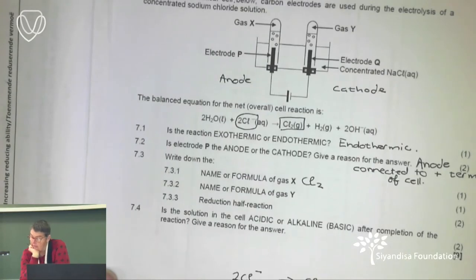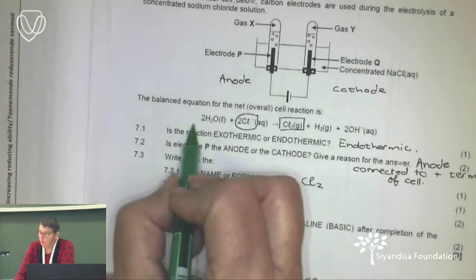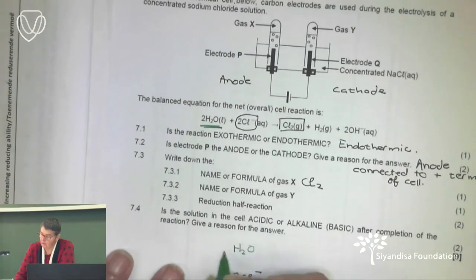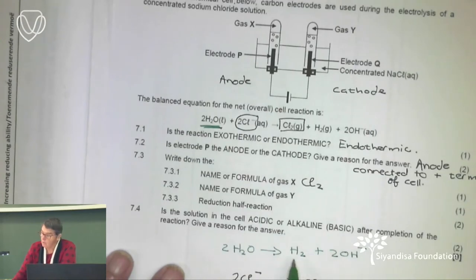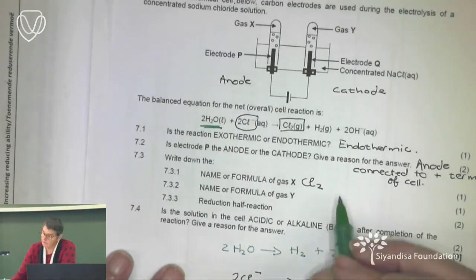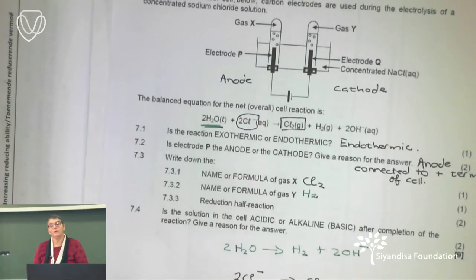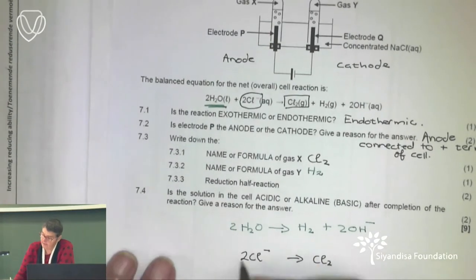For gas Y, on the cathode side we only had H₂O, and it becomes OH⁻. So what happened is H₂ gas formed. Gas Y is therefore H₂ or hydrogen gas. For the reduction half reaction, we've established the oxidation reaction is at the anode, so the cathode reaction is the reduction. We don't need to know this from memory — go and look it up on the standard electrode potential table.